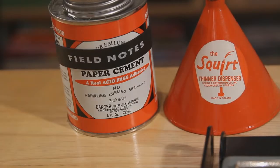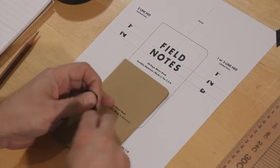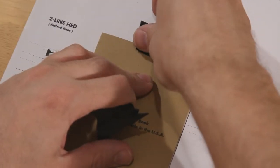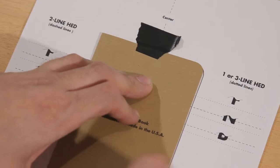You can see I've taped down my FN11B Dry Transfer Application template, which is available from FieldNotesBrand.com. I'm going to use this to line up the text to make sure everything's centered and aligned properly.